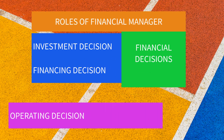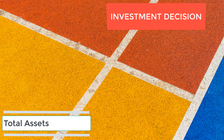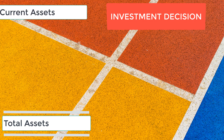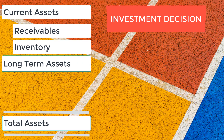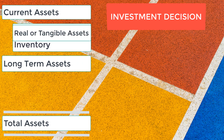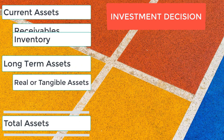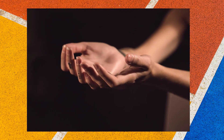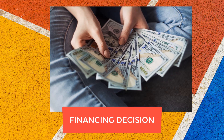To answer the question, let's discuss the types of decisions made by a financial manager. Investment decision is determining the composition of assets to be held by the firm. Assets can be short-term or current assets, such as receivables and inventory, and long-term assets. Long-term assets can be real or tangible assets, such as property, plant and equipment, or intangible assets, such as research and development. However, these assets are not free, so we need to raise money to acquire them, which is a financing decision.